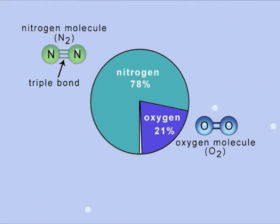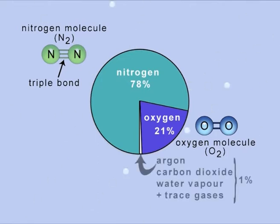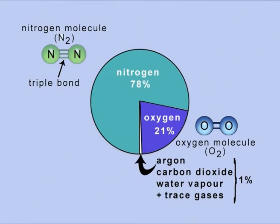Apart from nitrogen and oxygen, the amounts of all other gases are relatively small. These include the inert gas argon, carbon dioxide and water vapour. There are only trace amounts of other gases in the air.